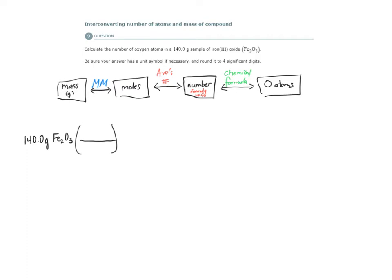We need the molar mass of iron 3 oxide in order to convert from a mass to moles of iron 3 oxide. So what is the molar mass? Let's find it.